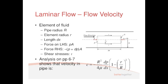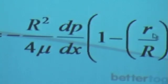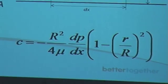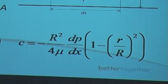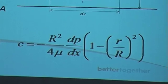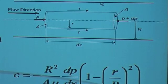So r here, lowercase r represents the radial position across the pipe, zero at the center and capital R at the wall. And the velocity varies as a function, and as you can see, a quadratic function of the radius.